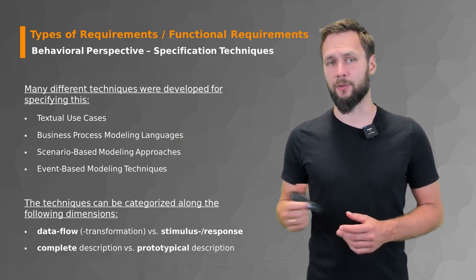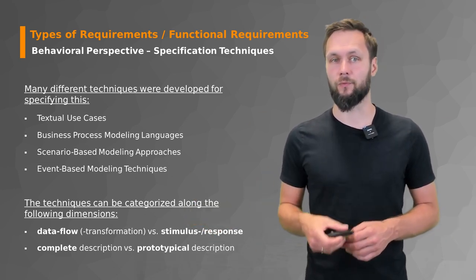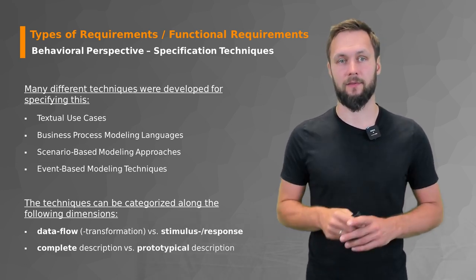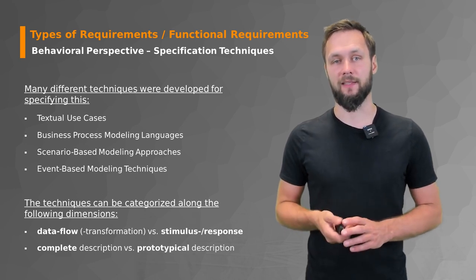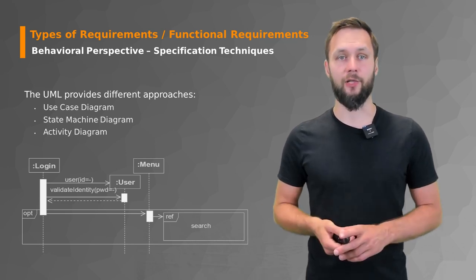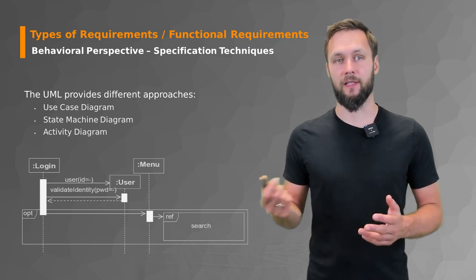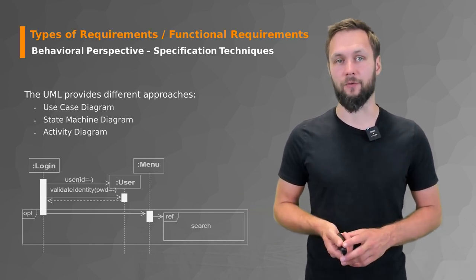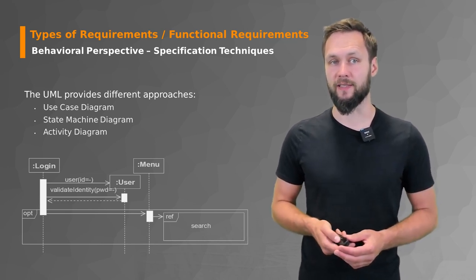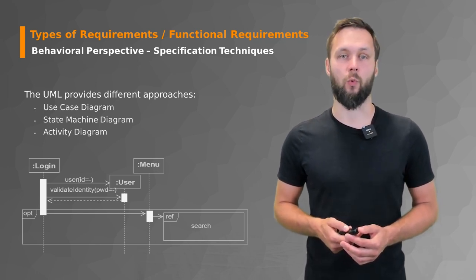The techniques can be categorized along dimensions like data flow versus stimulus response, or complete description versus prototypical description. We'll return in detail to those categorizations later when we talk about the elicitation and documentation phase of requirements engineering. UML also offers tools for the behavioral perspective: use case diagrams, state machine diagrams, and activity diagrams — knowledge expected from your CS 101 course.